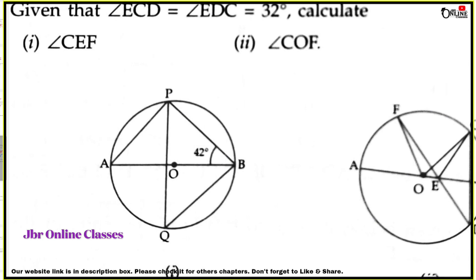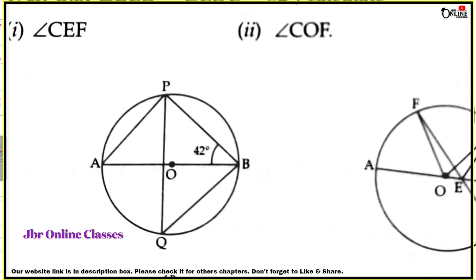Since AOB is the diameter of the circle, the arc above forms a semicircle. By the semicircle theorem, any angle in a semicircle equals 90 degrees. Therefore angle PAB — the angle in the semicircle — equals 90 degrees.